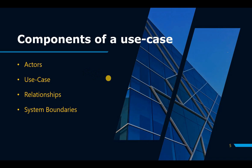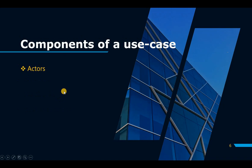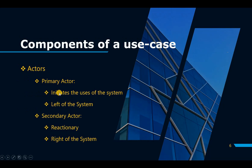An actor — there are two types: primary actors and secondary actors. Primary actors are the people that initiate the use of the system; they're always depicted to the left of the system and are interacting directly with the application. Secondary actors are more reactionary — if the primary actor needs them, then the secondary actor will get involved; otherwise they don't need to be.